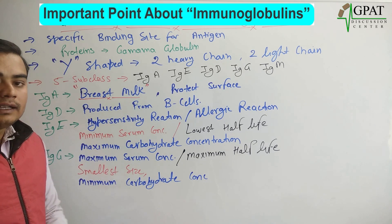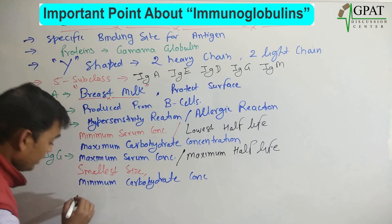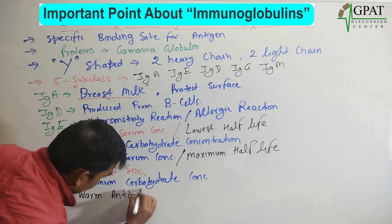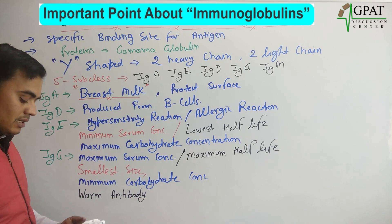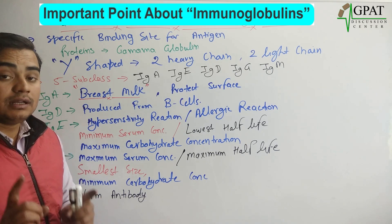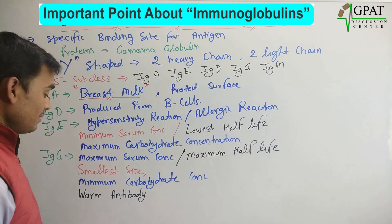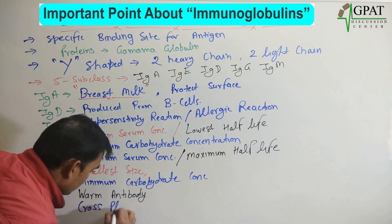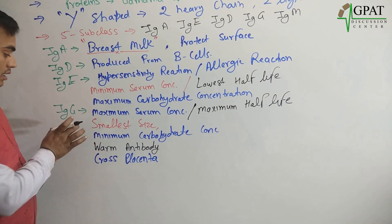IgG immunoglobulin is called the warm antibody — make sure this is a very important point. A number of times the question asks which immunoglobulin can cross the placenta. There is only one immunoglobulin that can cross the placenta, and that is IgG. This is a very important point — IgG crosses the placenta.